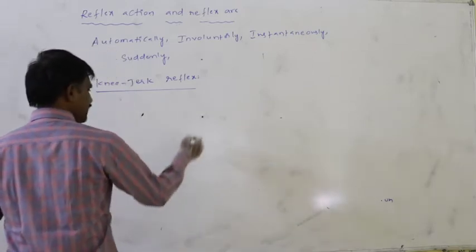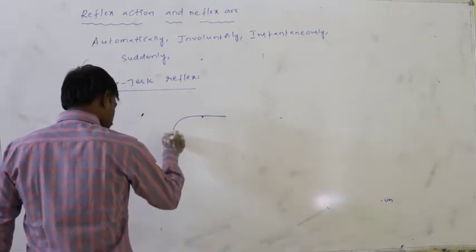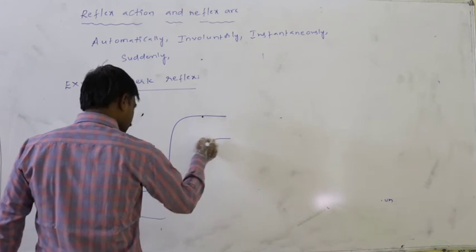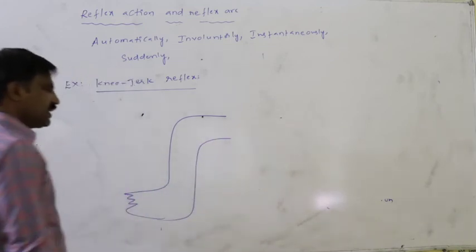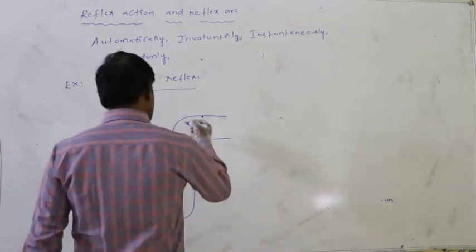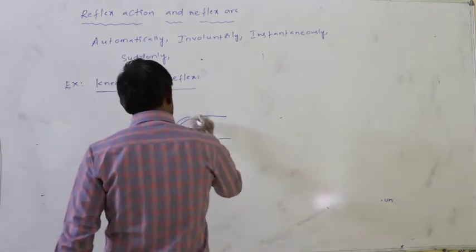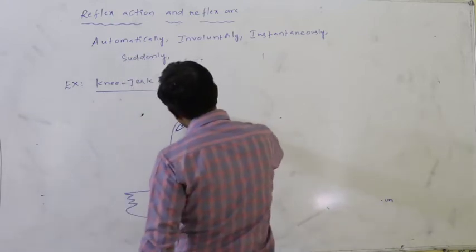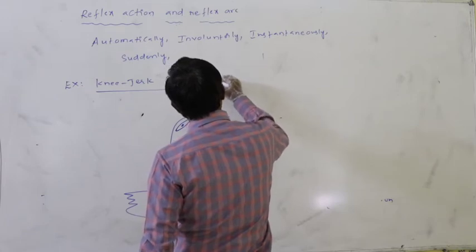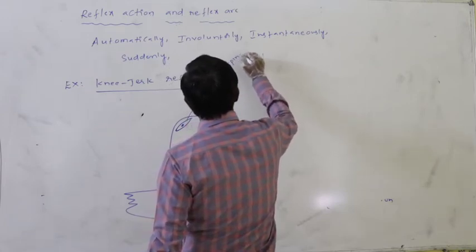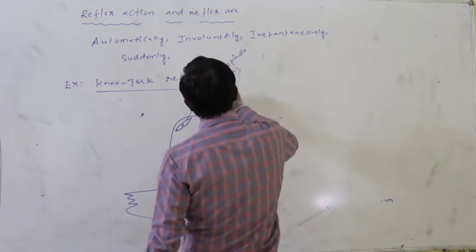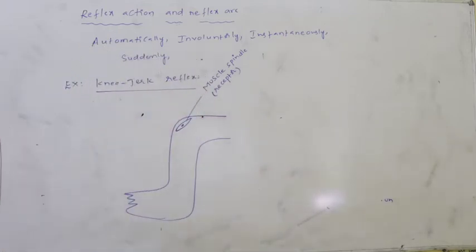What is the knee-jerk reflex? Assume this is the leg of a person. In the leg, the receptor present is called the muscle spindle. The muscle spindle is the receptor present in the leg of the person.